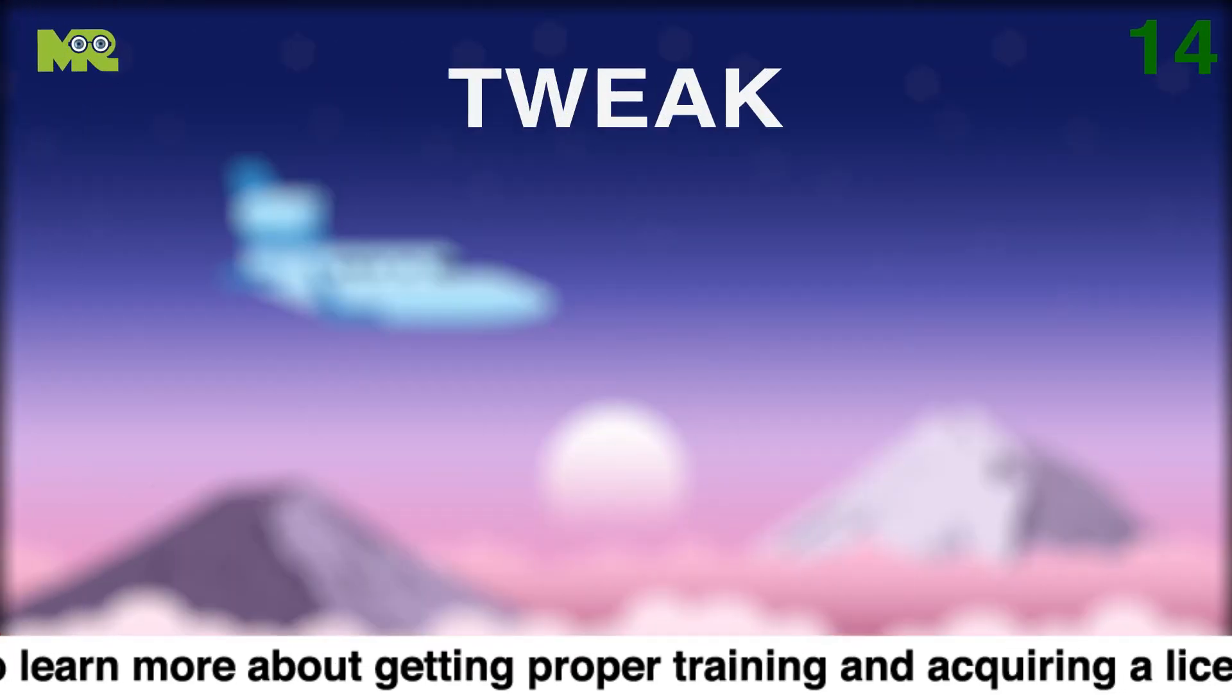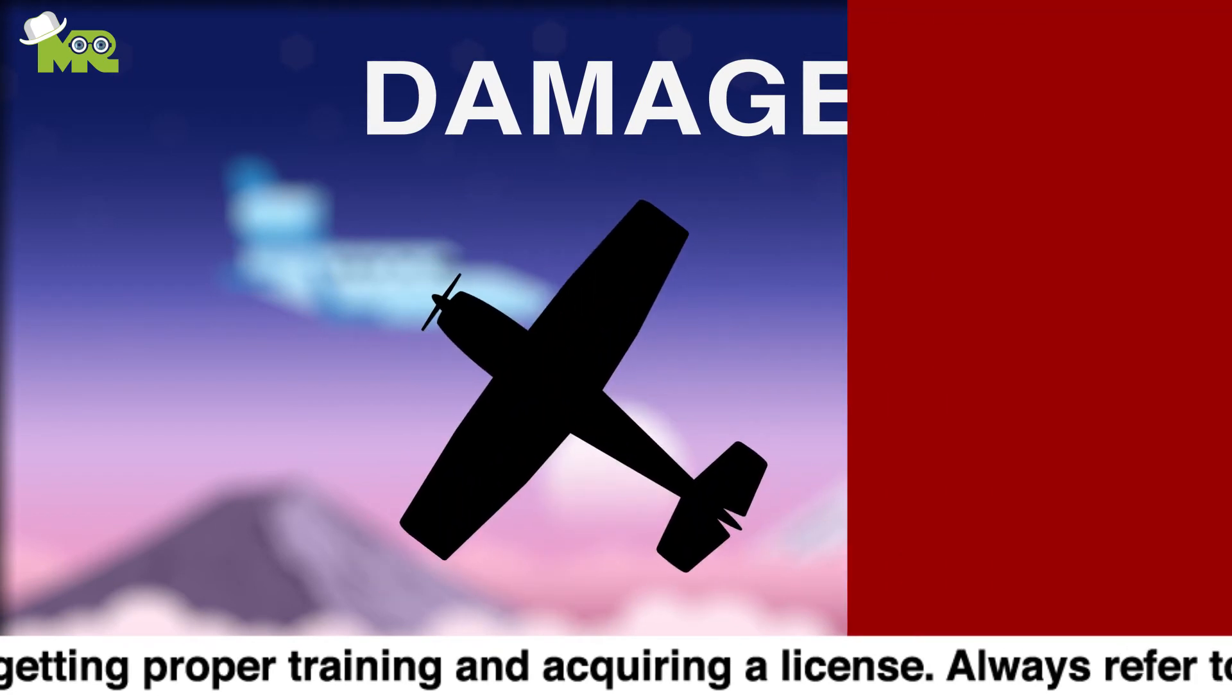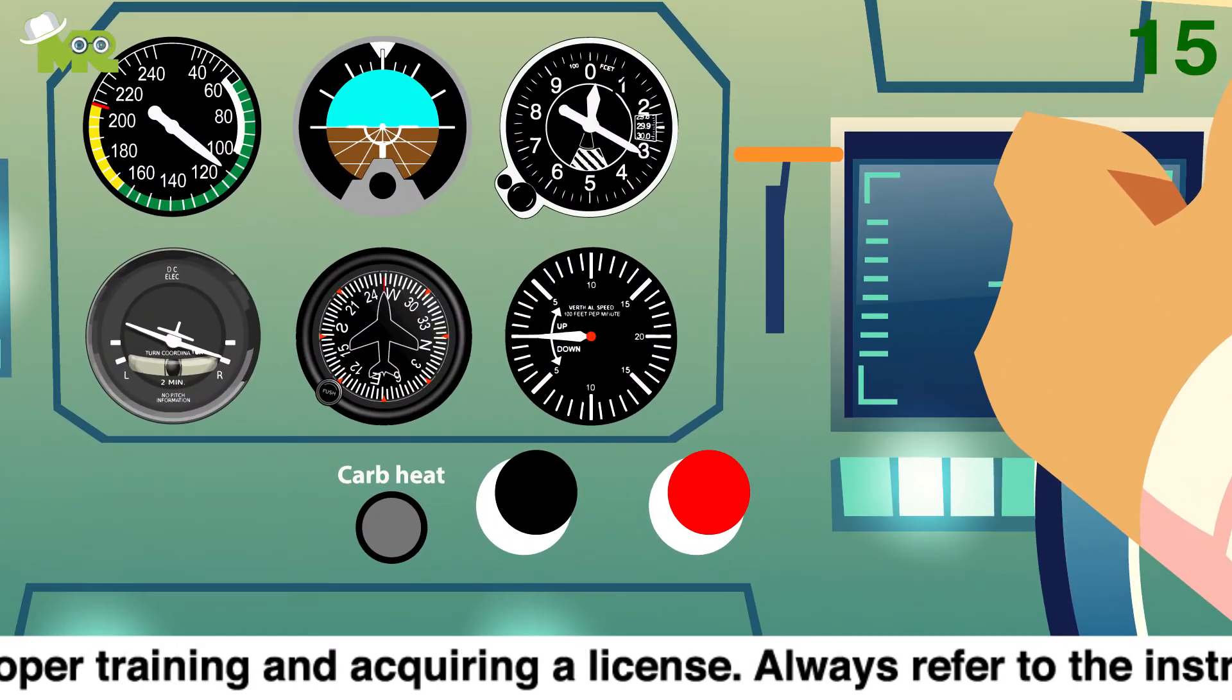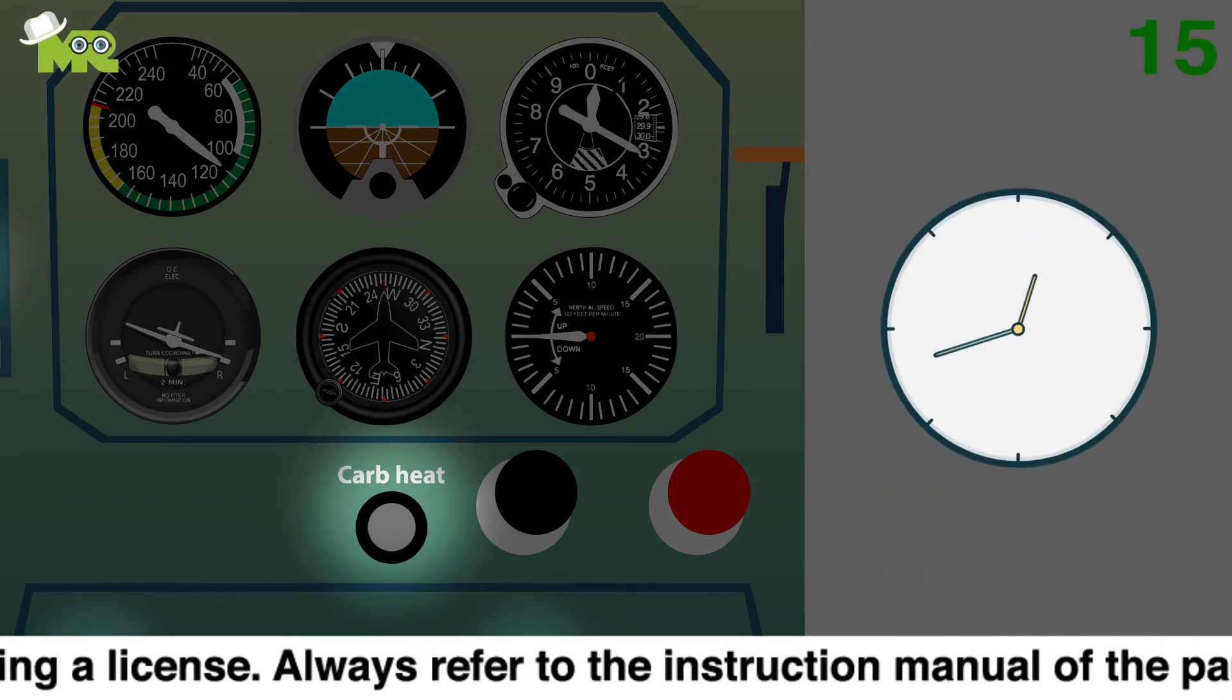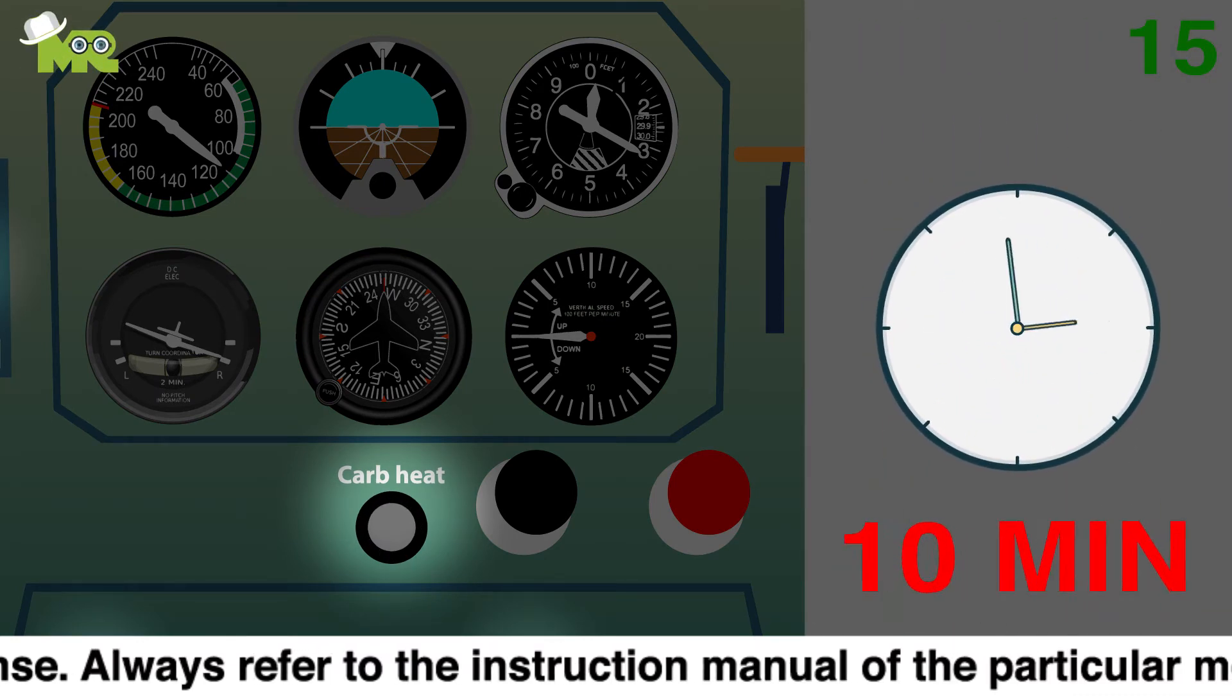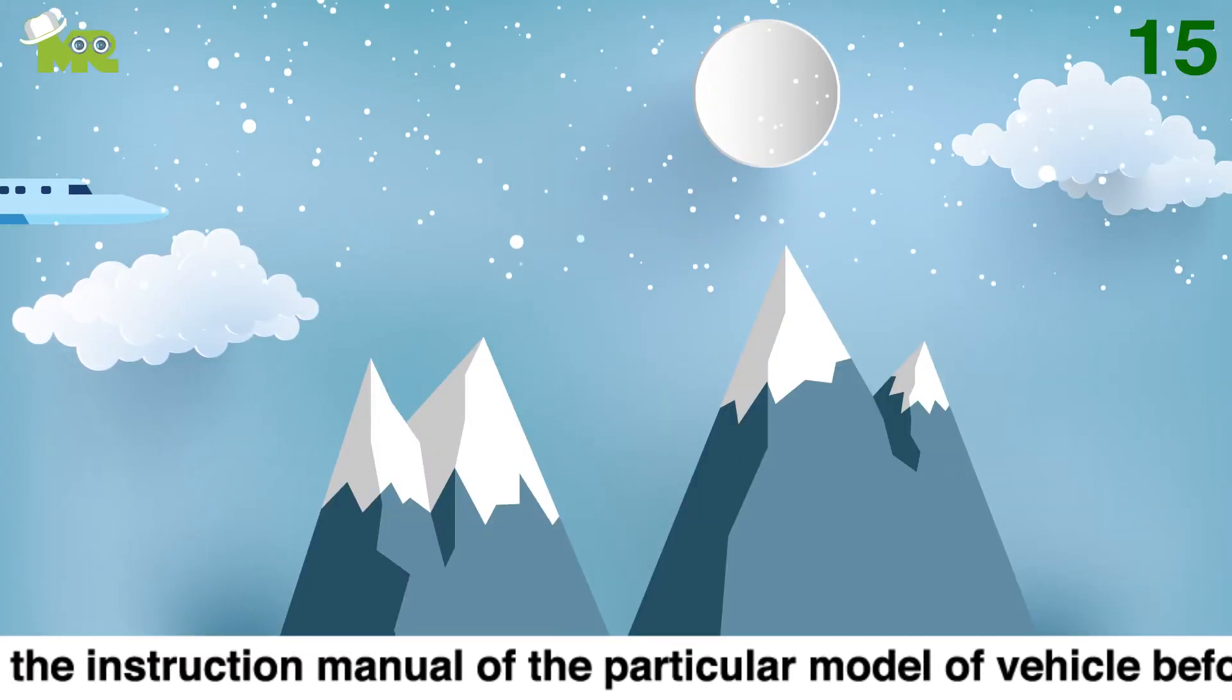Fourteen, if you tweak controls drastically, it might cause damage to your plane. Fifteen, on your console there is a small knob labeled carb heat. You have to apply carb heat for a short period of time after every 10 minutes, especially if you are flying at high relative humidity levels that encourage icing.